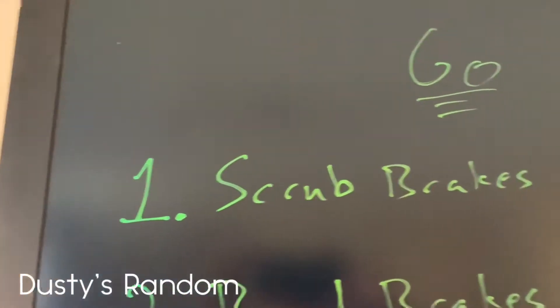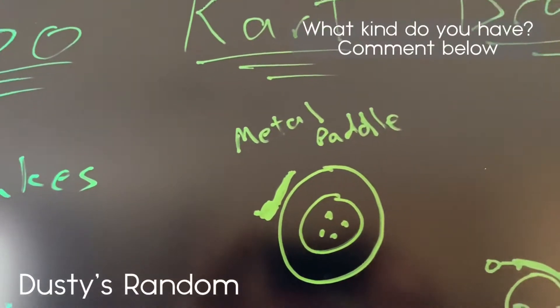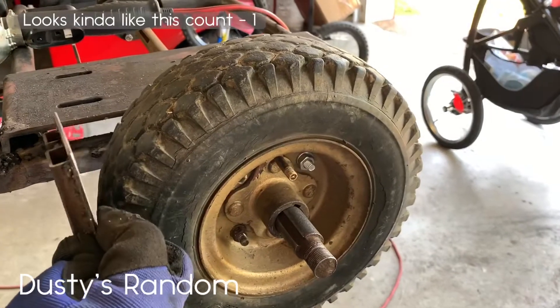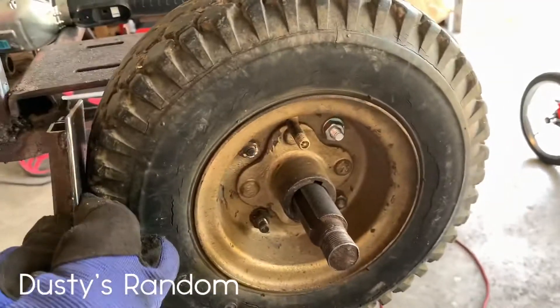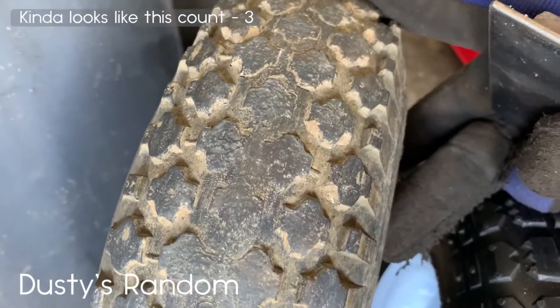First up, scrub brakes. Usually found on inexpensive go-karts, they use metal paddles to contact the rear tires for friction to slow down. Looks kind of like this. Not very efficient. Tends to wear the tires down. They start to look like this and then like this.